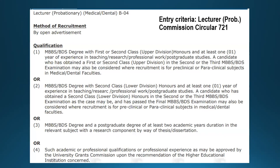The entry criteria for lecturer probationary — that is the initial step — are defined in the UGC Commission Circular 7/1, which describes what criteria you should possess to become a lecturer probationary, the first step of becoming a university academic. To enter the university academic life as a probationary lecturer, there are four categories through which you can get into the system.